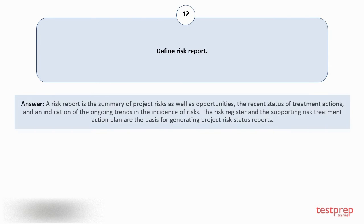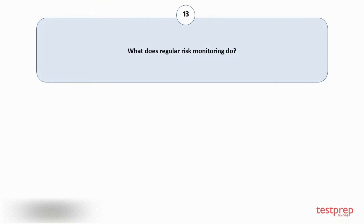A risk report is the summary of project risks as well as opportunities, the recent status of treatment actions, and an indication of the ongoing trends in the incidence of risks. The risk register and the supporting risk treatment action plan are the basis for generating project risk status reports. Question number thirteen: What does regular risk monitoring do?